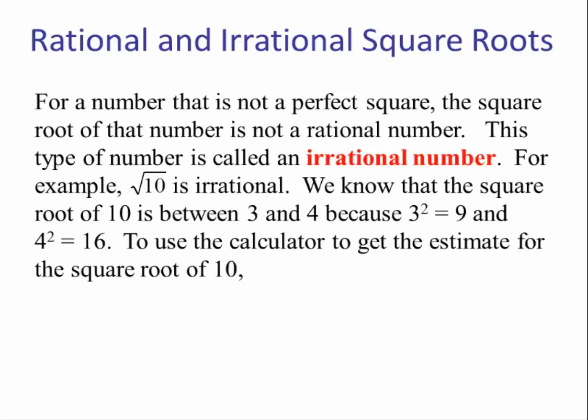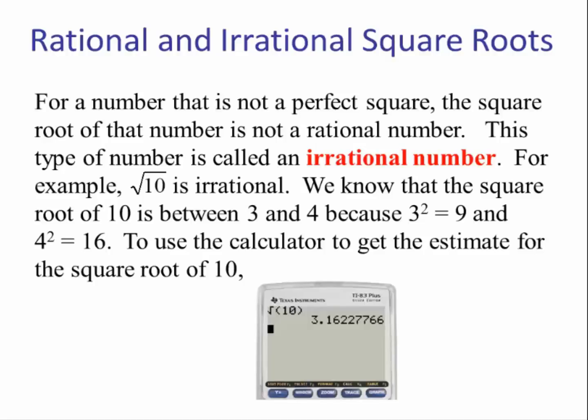For a number that's not a perfect square, the square root of that number is not a rational number — this type of number is called an irrational number. For example, the square root of 10 is irrational. We know that the square root of 10 is between 3 and 4 because 3 squared is 9 and 4 squared is 16, and 10 is in between 9 and 16. Using a calculator, the square root of 10 is approximately equal to 3.16227766. Irrational numbers in decimal form go on forever.